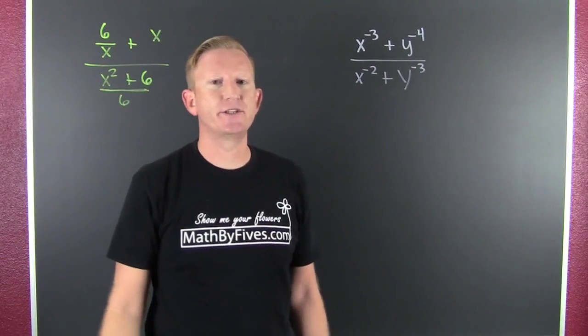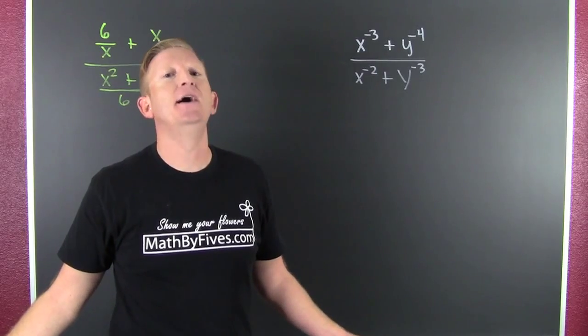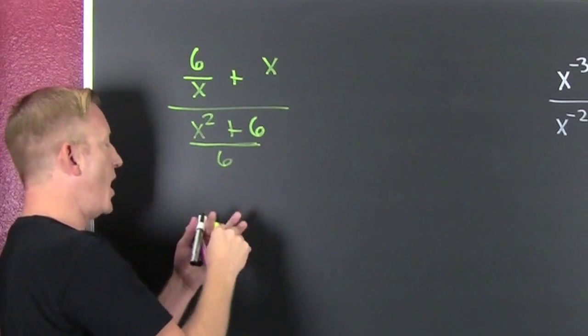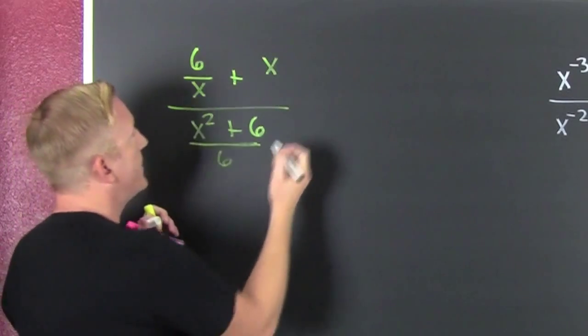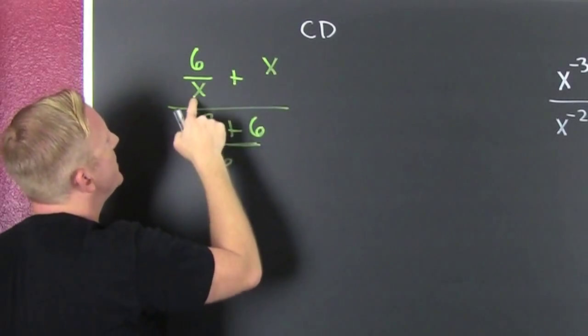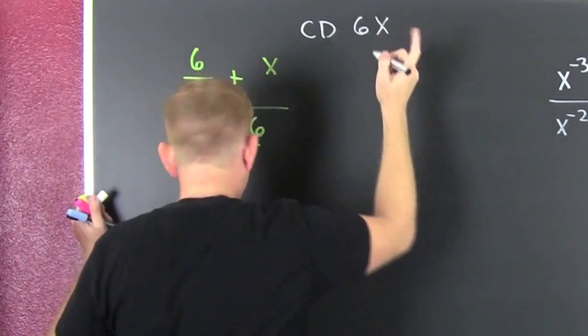Let's reduce that action by multiplying top and bottom by a common factor. I need a common denominator of all the denominators. See these? My common denominator is going to be 6x.